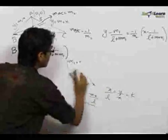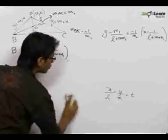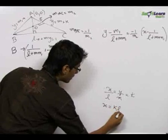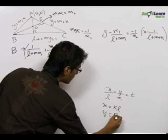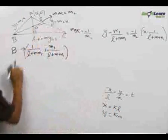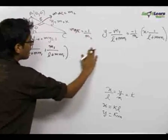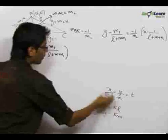Now we know that our orthocenter which was given by x equals KL and y equals KM lies on the line BE. This is the equation of line BE, so satisfying the point KL comma KM in this line.